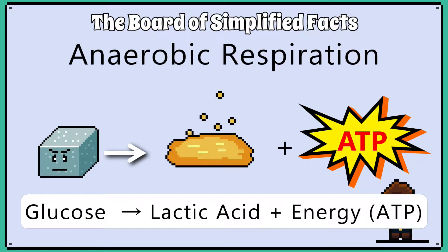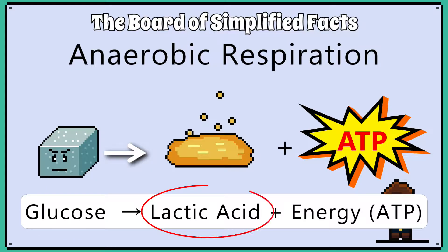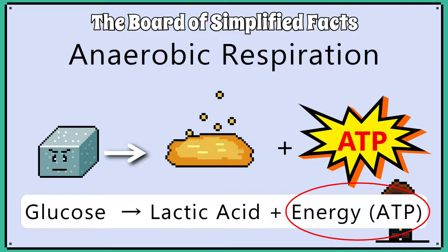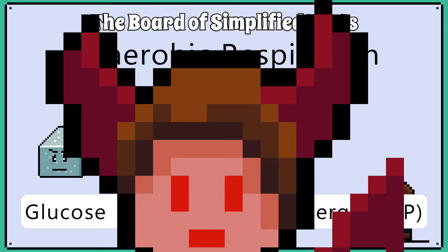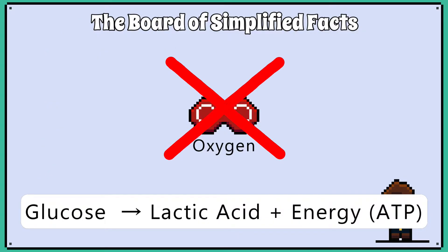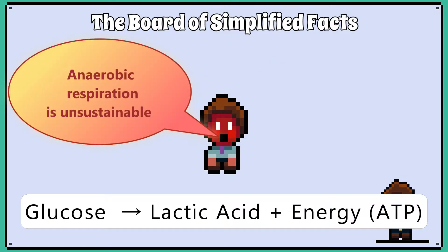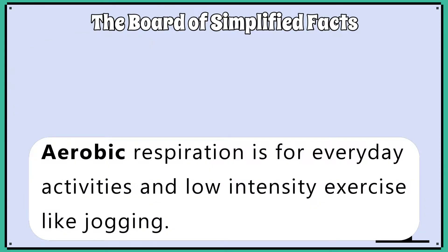Anaerobic respiration is a process where glucose is broken down into lactic acid and energy is released in the form of ATP. Learn the equation. Notice the process doesn't need oxygen, but sadly, we can't do this for very long.